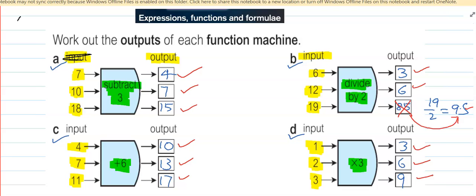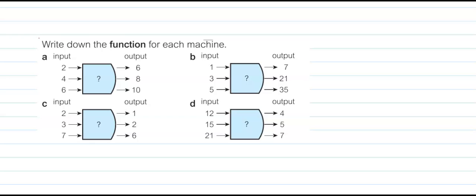Now there is a practice question for you. Write down the function for each machine. If you see, the middle box is empty — there is a question mark. We need to put a number with a sign, whether it is plus, minus, multiplication or division. There are 4 questions: A, B, C and D. You need to find which operation goes in the middle.